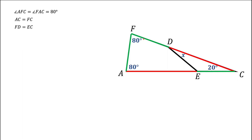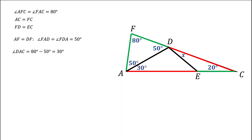Now we keep looking for isosceles triangles, equilateral triangles. One thing we see: there is AF and FD — they're both green. So if I connect A and D, I'm going to get an isosceles triangle. Angles at the base should be the same, so angle D should be the same as angle A, or this portion of angle A, and they will both be 50 degrees. Now since the big angle A is 80 and the top part is 50, the bottom part has to be 30 degrees.